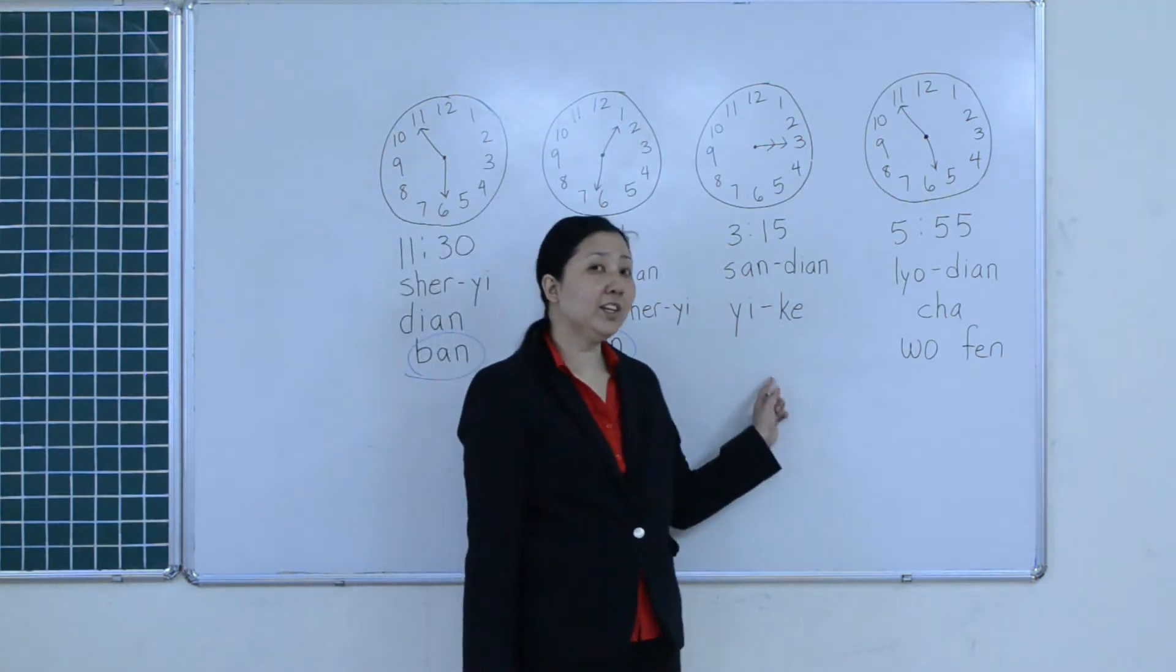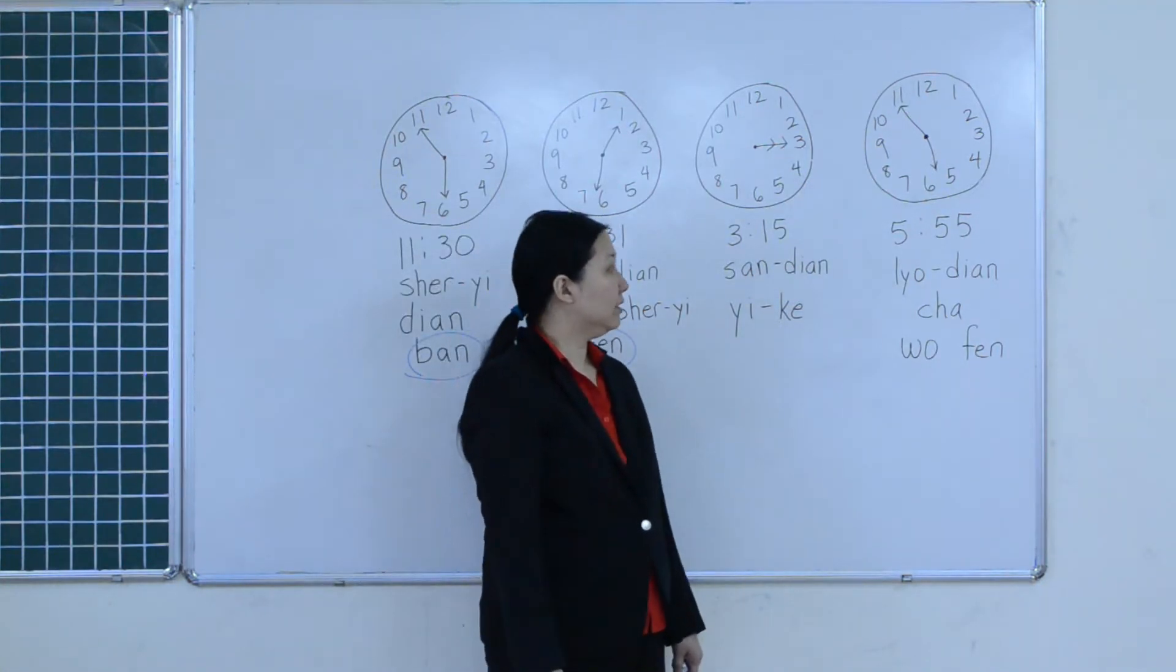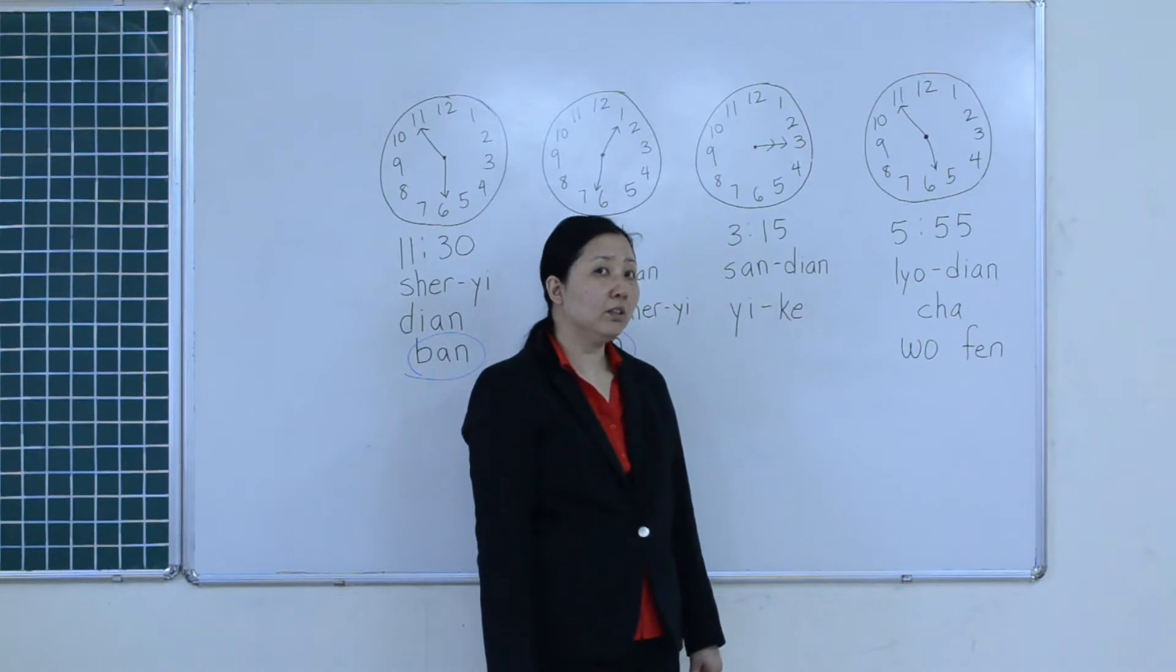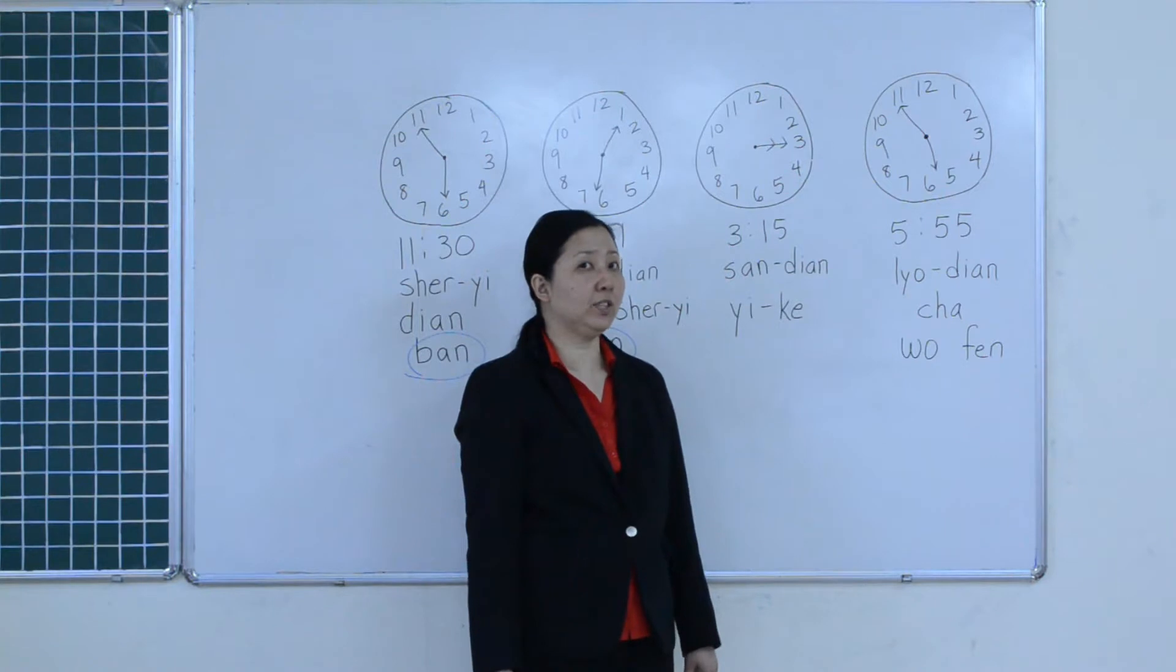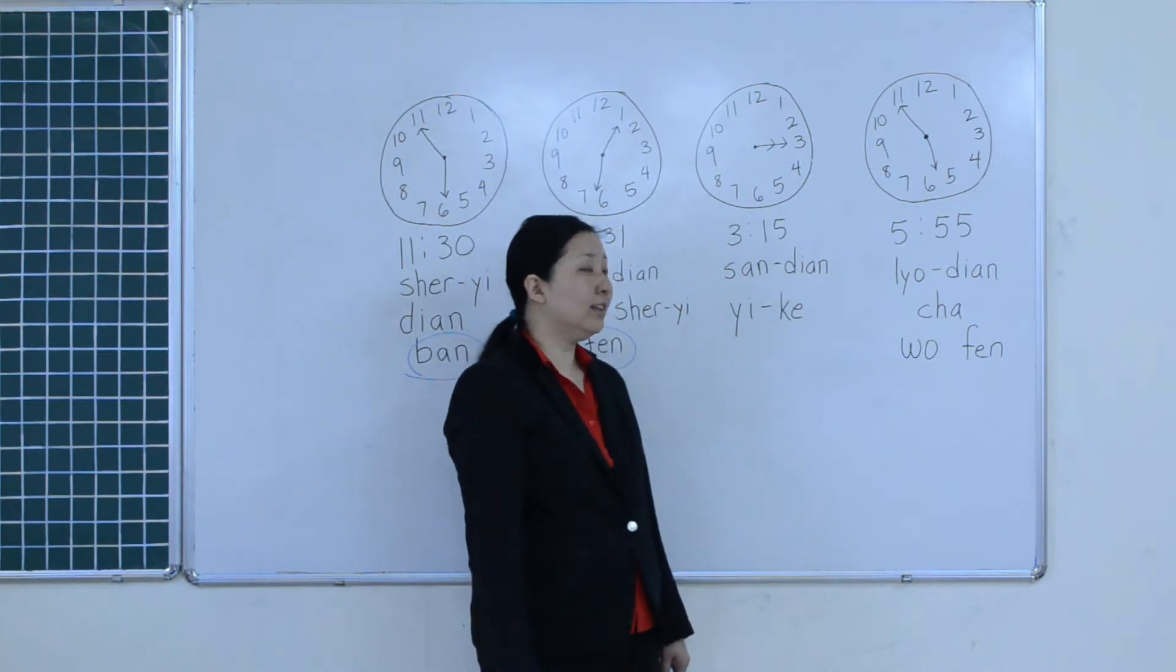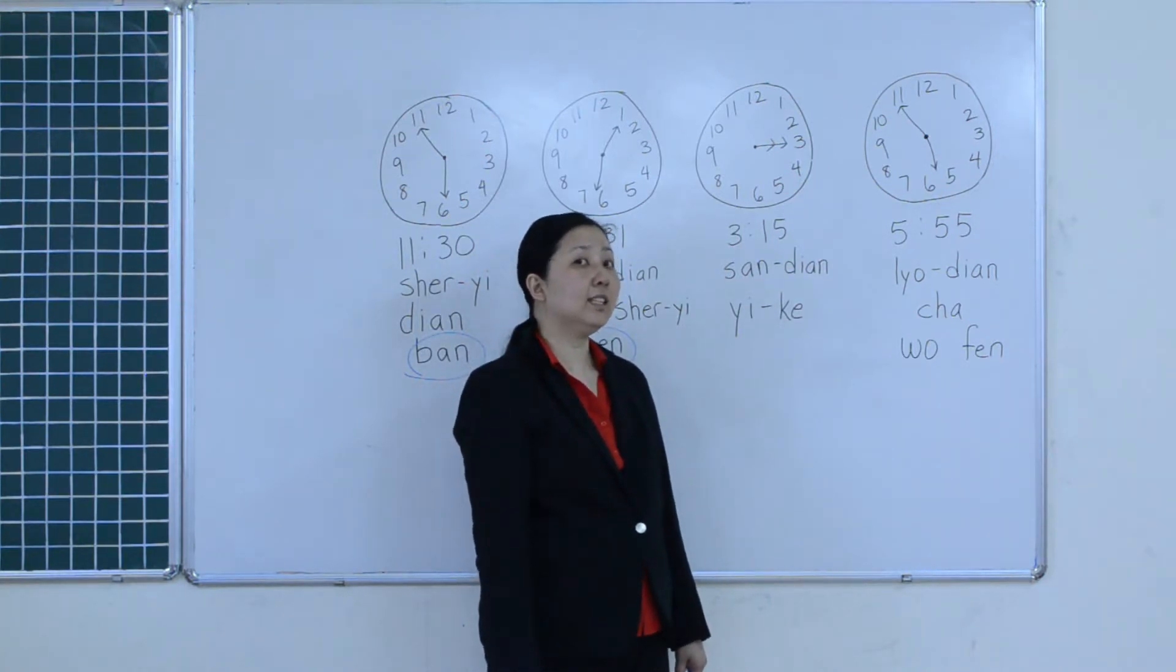And over here, 一刻 means quarter of an hour. So in order to say 3:15, we say 三点一刻.